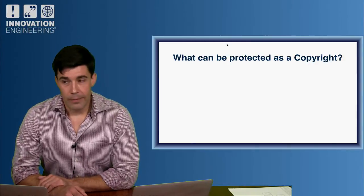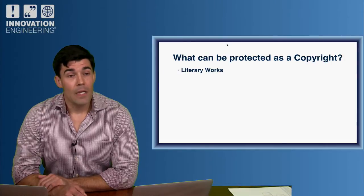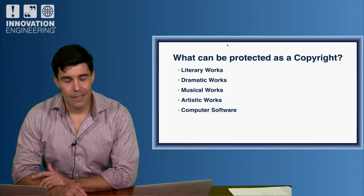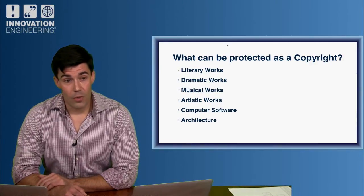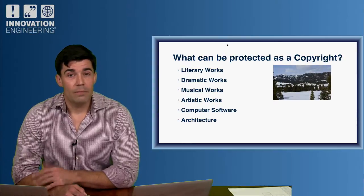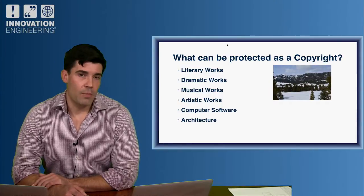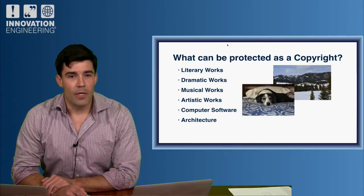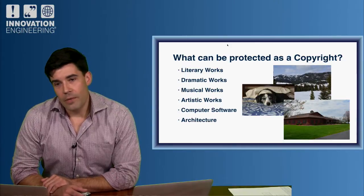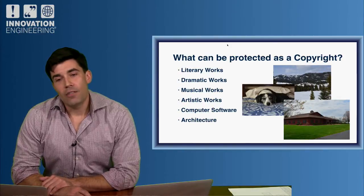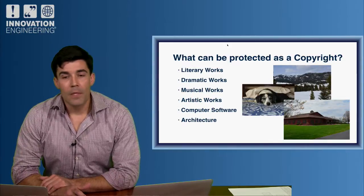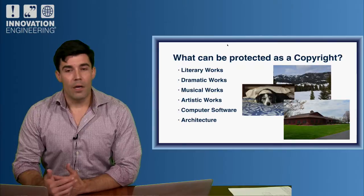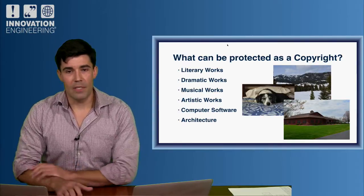Before we get into filing, we've got to talk about what you can actually copyright. There's a long list: literary works, dramatic works, musical works, artistic works like paintings and statues, computer software — you can actually protect the code — and architecture, so you can protect your blueprints. For example, I went out to Montana and took a picture — I could file that as a copyright because I took it. Here's a picture of my dog Domino — same thing. You can get a copyright on that photo. Or the ranch here — I went outside and took a picture of it, so I own that photograph. But the ranch could also protect the architecture of the building so nobody else could mimic the same exact place.